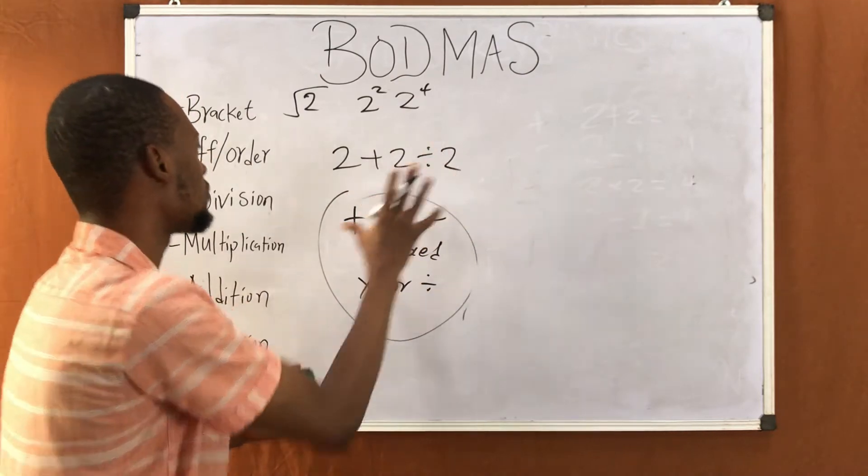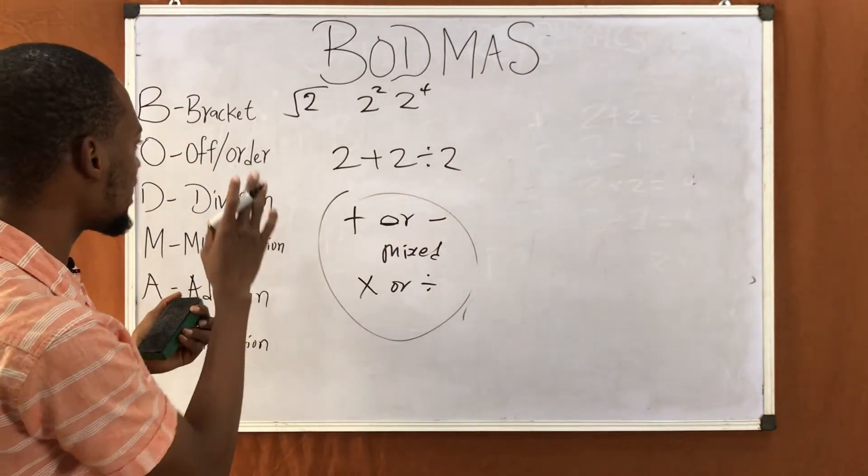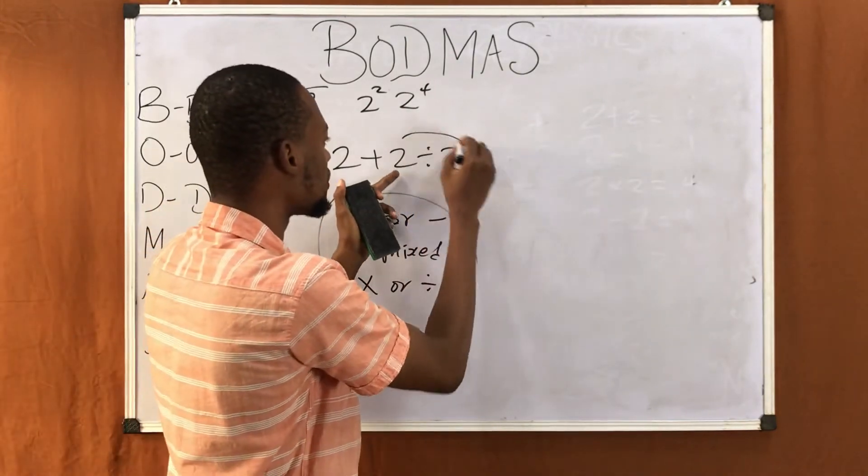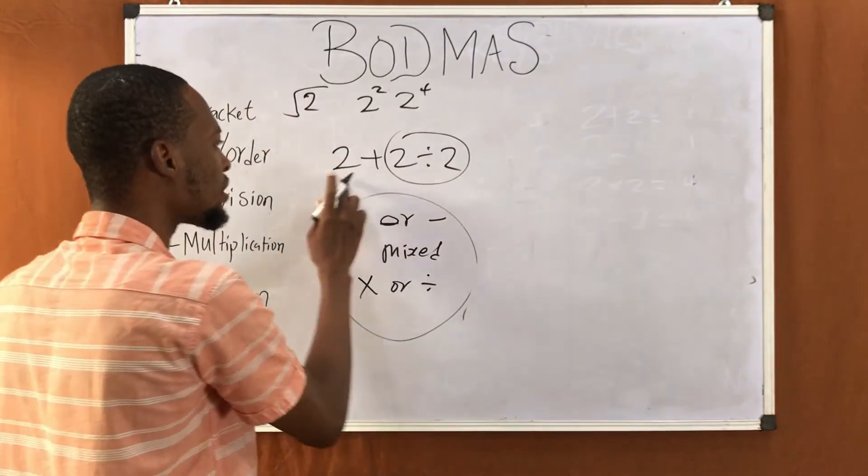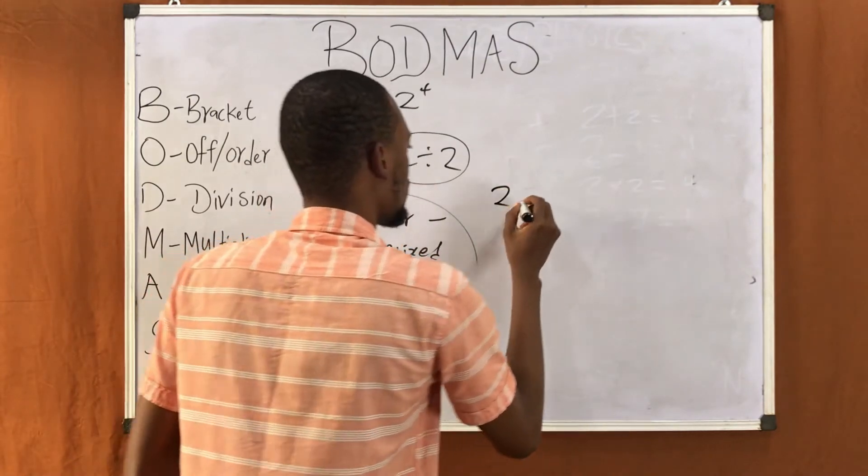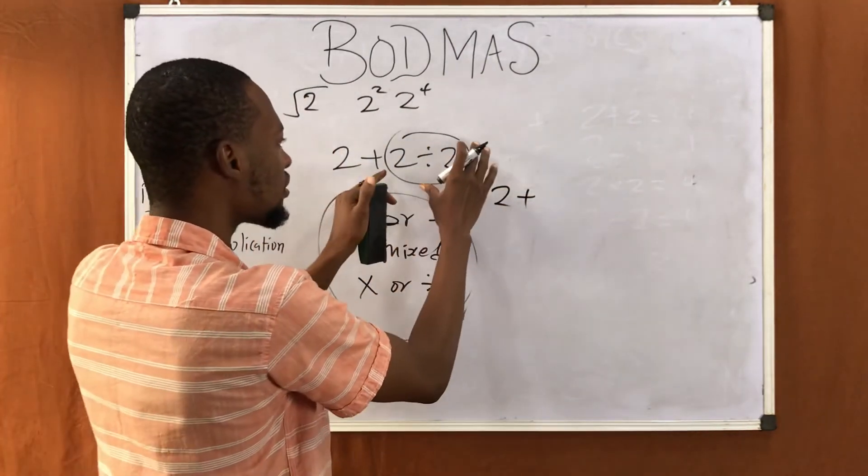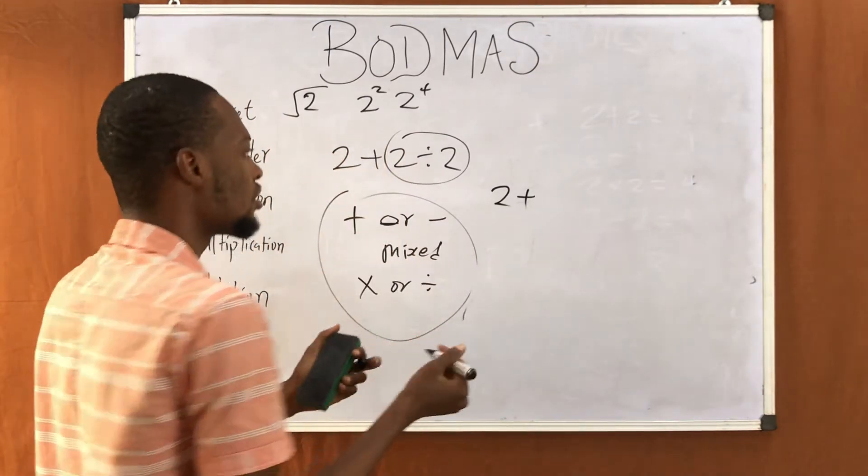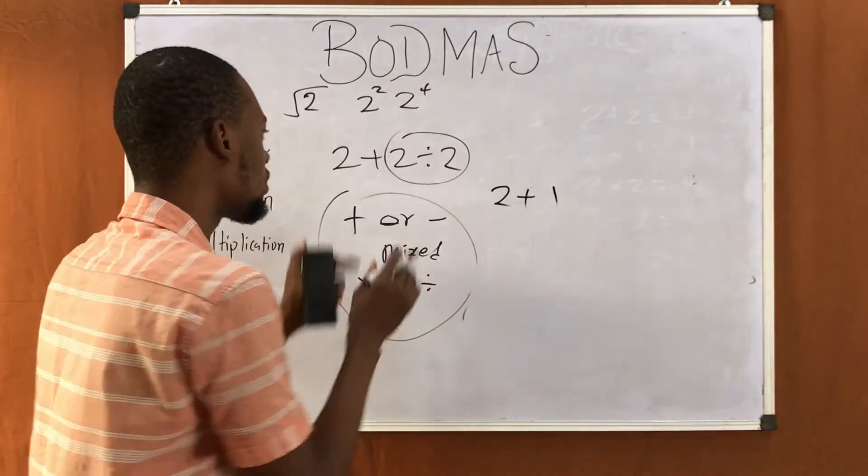Is there division? Yes. So that means we face division first, okay. So leave this one the way it is, two plus, then the division: two divided by two is one.